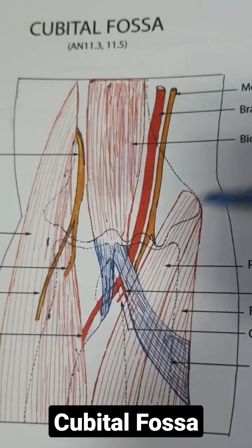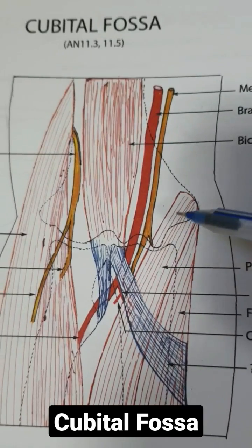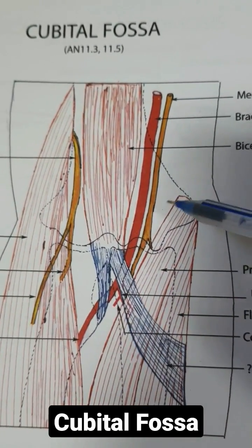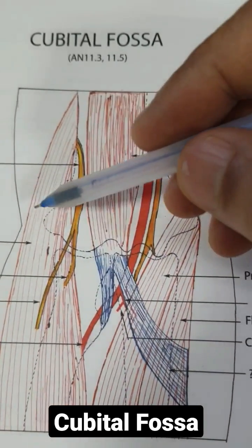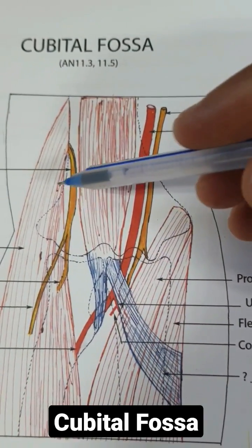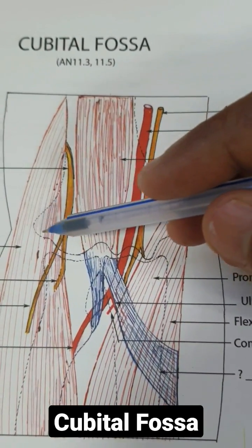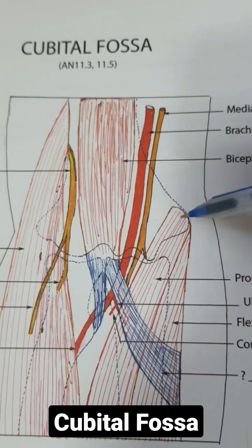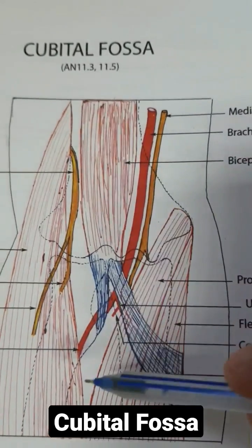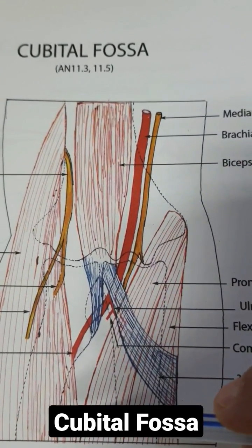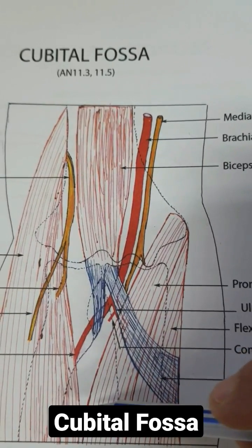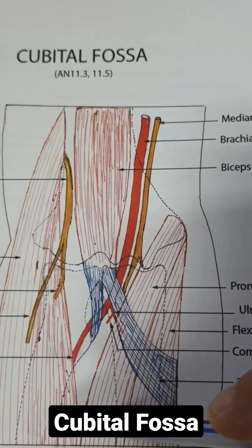Now, the boundaries of the cubital fossa. Medially, it is formed by the lateral border of the pronator teres. Laterally, it is formed by the medial border of the brachioradialis. The base is formed by an imaginary line passing through the two epicondyles of the humerus. The apex is formed where the medial and lateral borders meet.